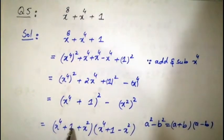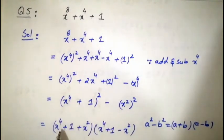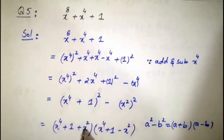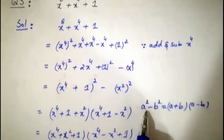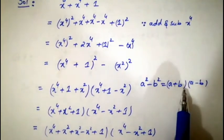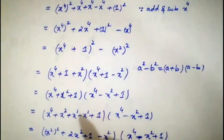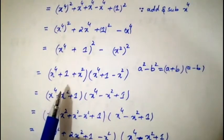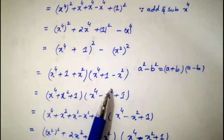This gives us (x⁴ + x² + 1)(x⁴ − x² + 1). Now the first factor x⁴ + x² + 1 can be simplified further. We apply completing the square again: (x²)² + x² + x² − x² + 1 = (x²)² + 2x² + 1 − x² = (x² + 1)² − x². Applying a² − b² gives (x² + 1 + x)(x² + 1 − x) = (x² + x + 1)(x² − x + 1).